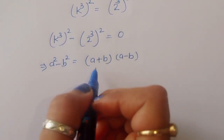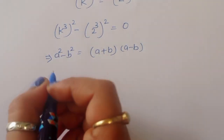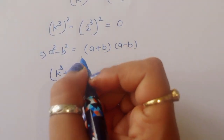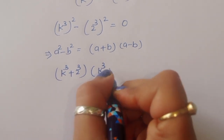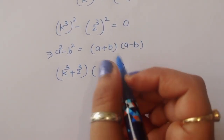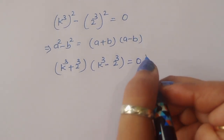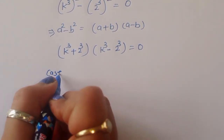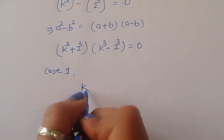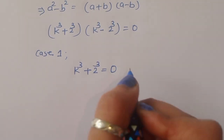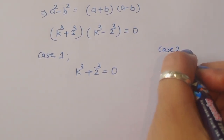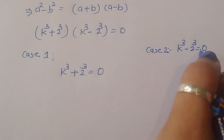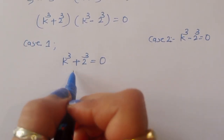Applying the a squared minus b squared formula, we get: k power 3 plus 2 power 3, times k power 3 minus 2 power 3, equals 0. This gives us two cases: Case 1 is k power 3 plus 2 power 3 equals 0, and Case 2 is k power 3 minus 2 power 3 equals 0.